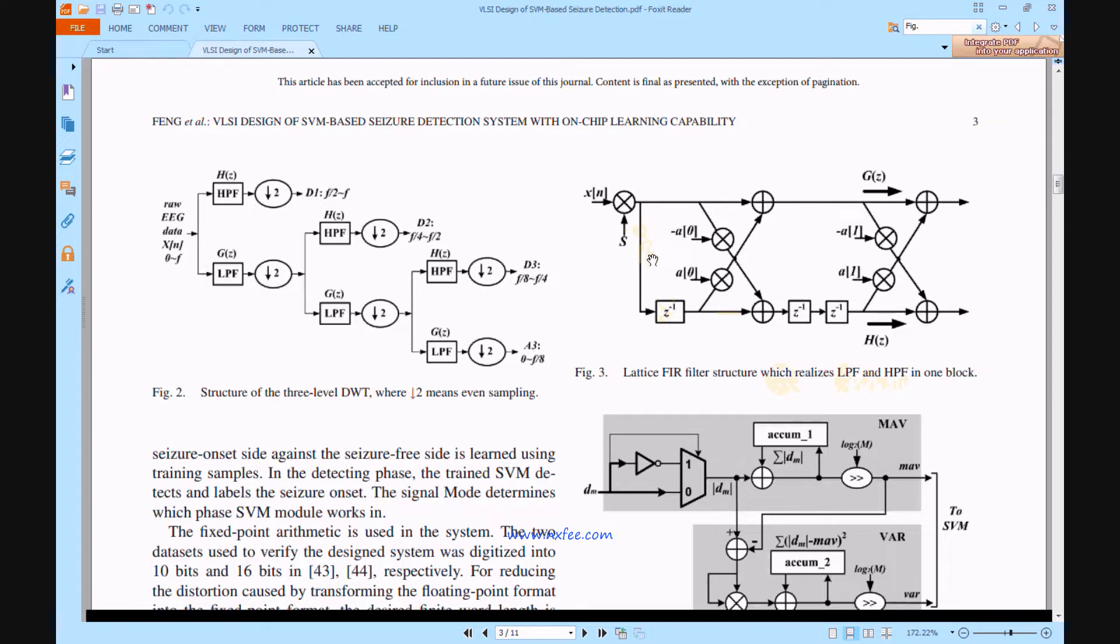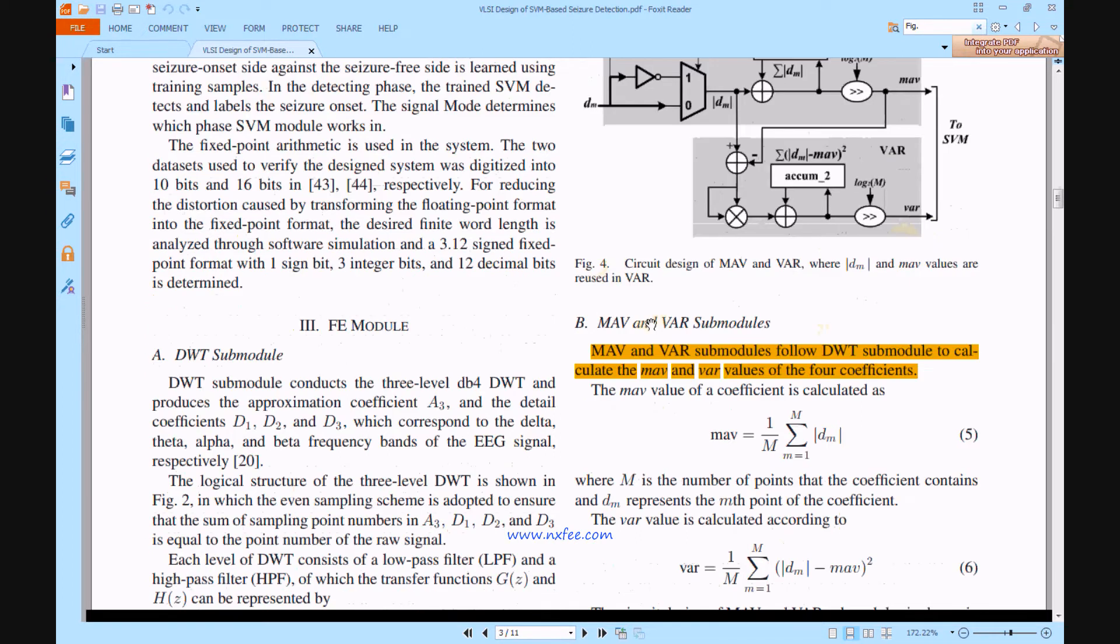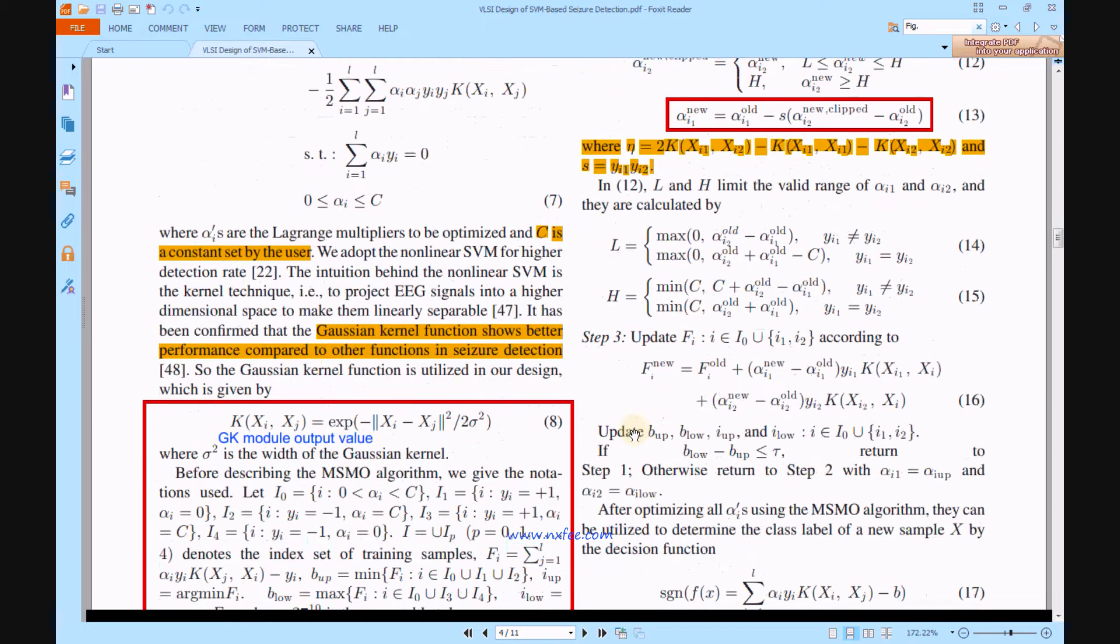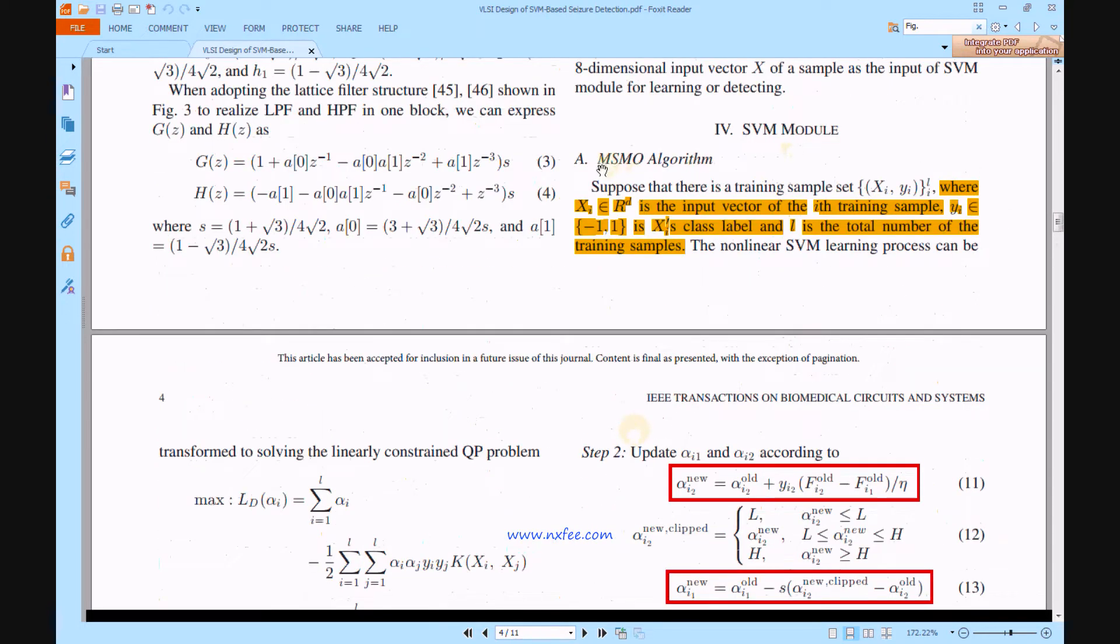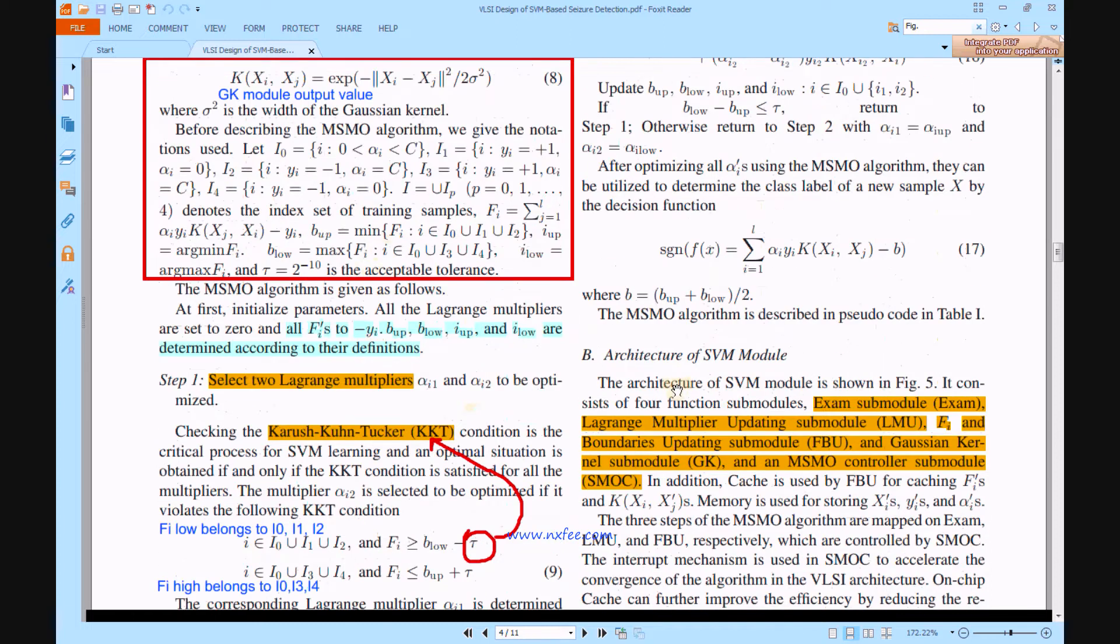The architecture is the same for LPF and HPF, but the coefficients differ. After this, Figure 4 architecture shows MAV and VAR. These two outputs are given to SVM models. This SVM model uses MSMO algorithms. The algorithm details are given with more descriptions.